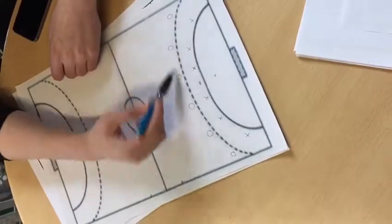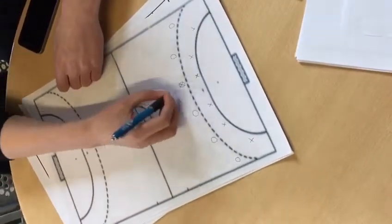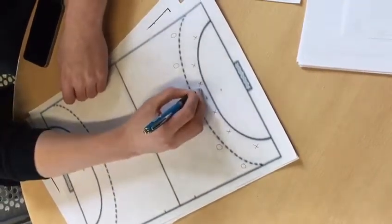So when the ball moves around the outside, they shuffle with it. So if the ball starts here, and it's passed here, everyone shifts this way.